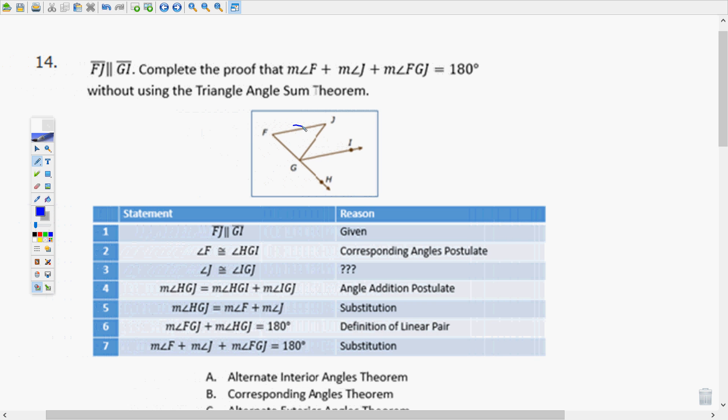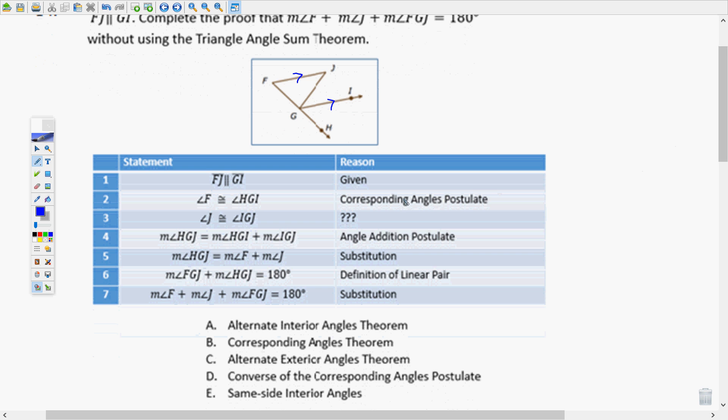So FJ is parallel to GI. Complete the proof that the measure of angle F plus the measure of angle J plus the measure of angle FGJ equals 180 degrees without using the triangle angle sum theorem, because that's what you're trying to prove is the triangle angle sum theorem. So we just follow the proof. Look at the different things that they've given us and they give us the given FJ is parallel to GI.